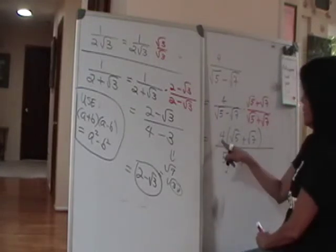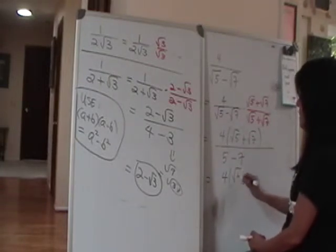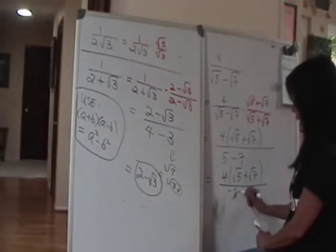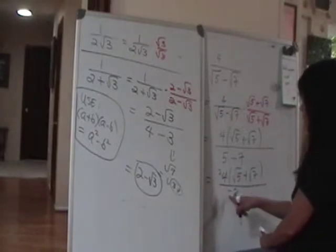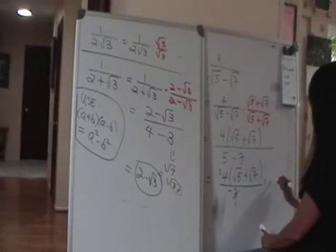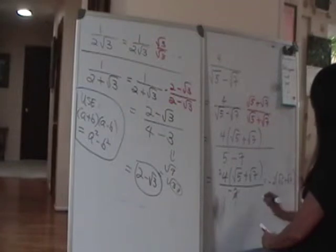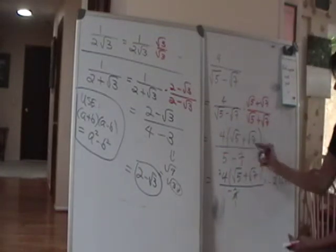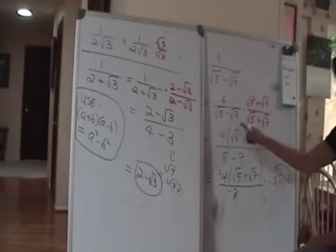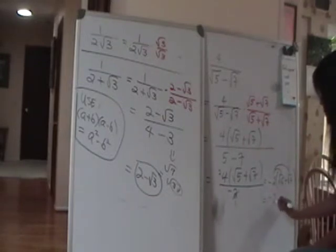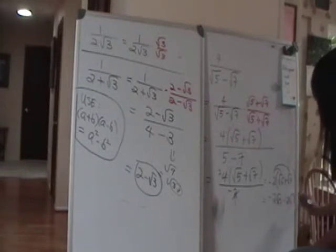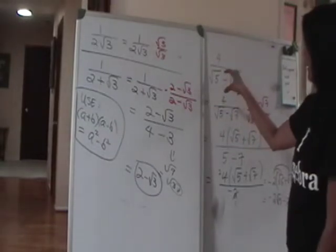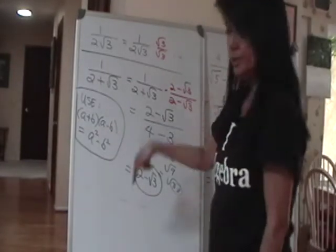In the denominator, negative times positive is negative; square root of 7 times square root of 7 — two sevens inside — so one 7 comes out. You have 5 minus 7 in the denominator, which is negative 2. The 4 and negative 2 cancel: that becomes 1 and this becomes 2, with a negative. The final answer is negative 2 square root of 5 minus 2 square root of 7. Sometimes things simplify, so do not carry out multiplication until the very end except for the denominator where you want to see the radical sign disappearing.